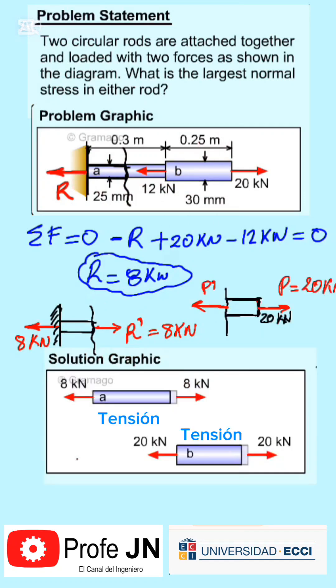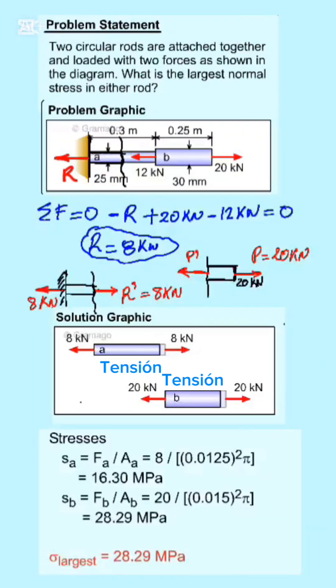There we have it. We have the loads in the two sections, the thin section and the thick section. This would correspond to the graphical solution: eight kilonewtons in the thin section, 20 kilonewtons in the thick section.